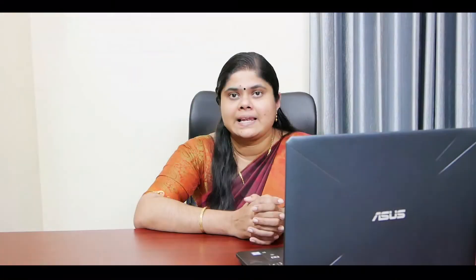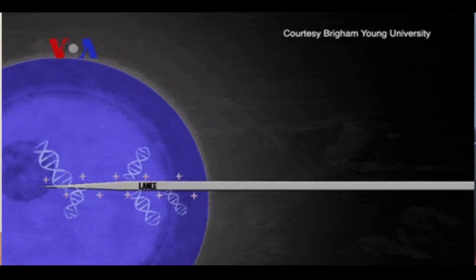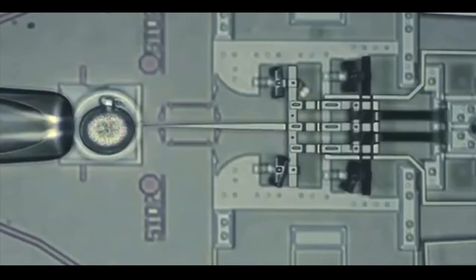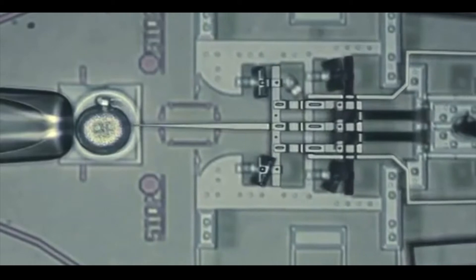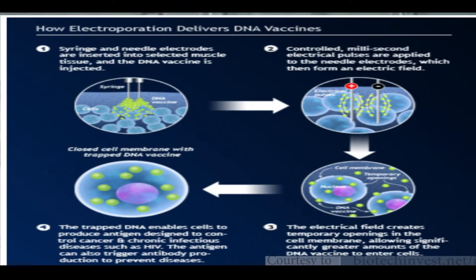The major distinction between physical and chemical transfection is that in physical methods, the DNA is delivered directly into either the cytoplasm or the nucleus using some kind of physical force without any requirement for interaction with the plasma membrane. This avoids the involvement with the endosomal pathway and this limits the amount of damage sustained by the exogenous DNA. Physical transfection methods are efficient for both in vitro and in vivo gene transfer. Synthetic complexes are not required because the gene transfer process involves breaching the cell membrane and introducing the nucleic acid directly into the cell and in some cases directly into the nucleus.